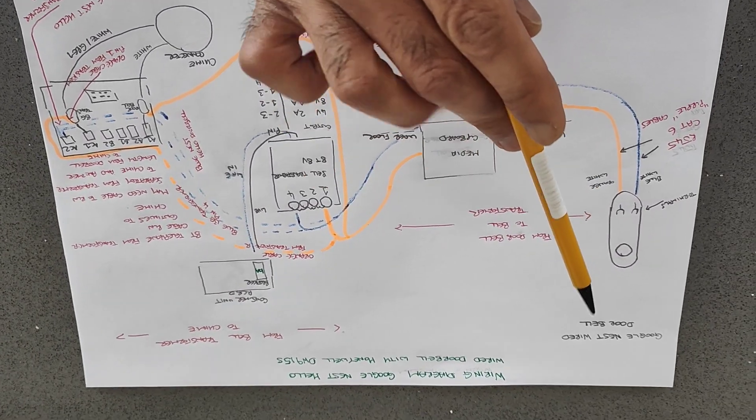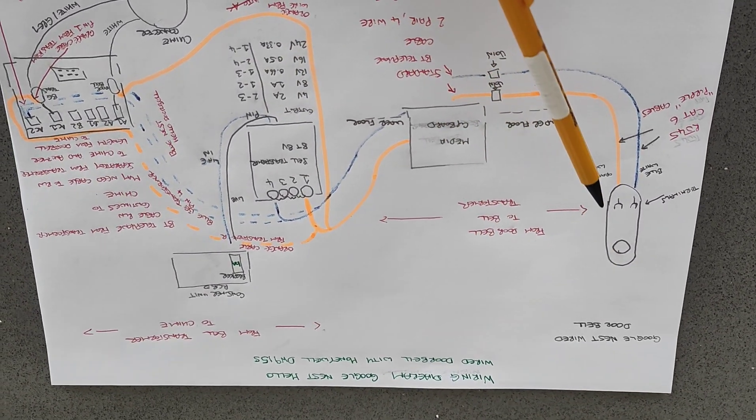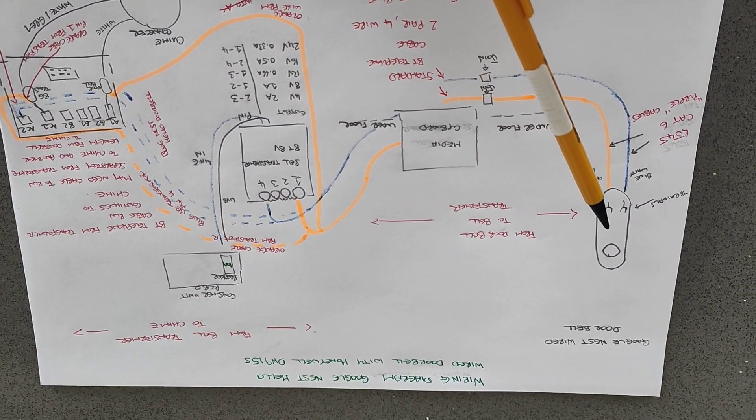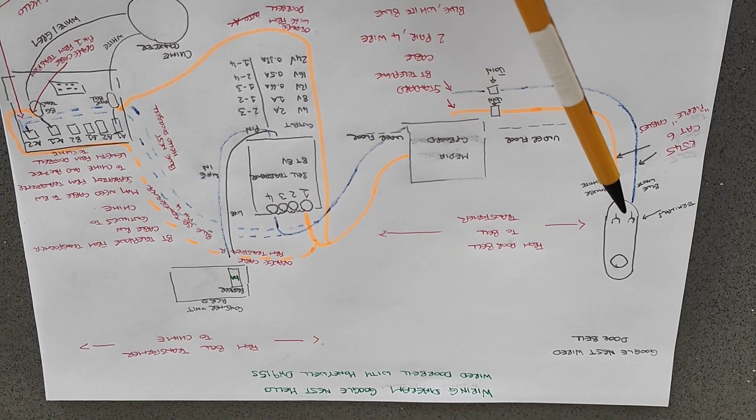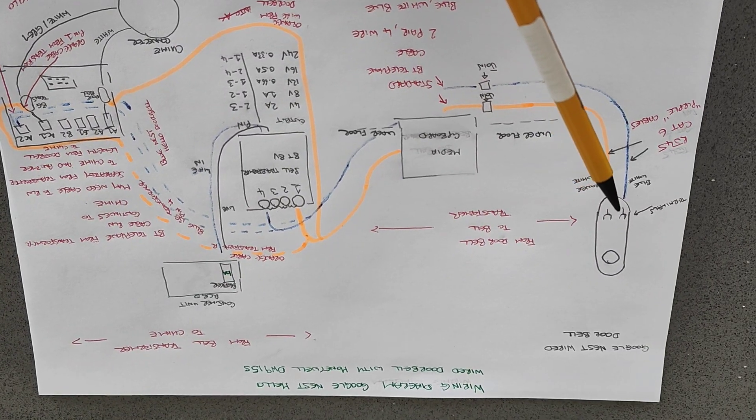So we'll start over here. What we have is obviously a Google Nest wired doorbell. Now when you open that up you will have two little screws with some terminals.